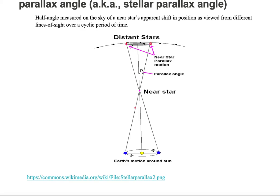And then we're going to measure this angle on the sky of the apparent shift, and half that angle is the parallax angle. The reason why we do a parallax angle is because we can make a right triangle and we can solve for distance to the star.